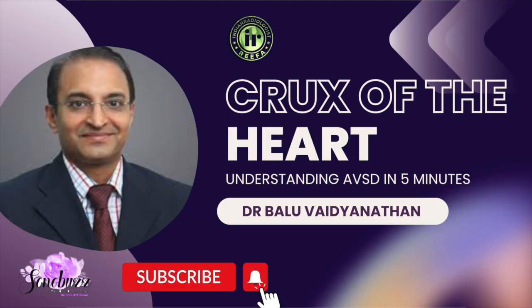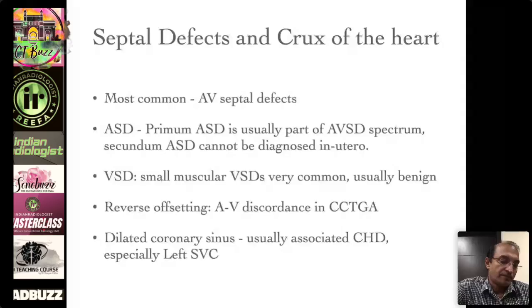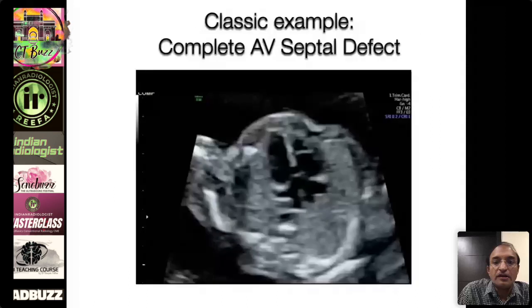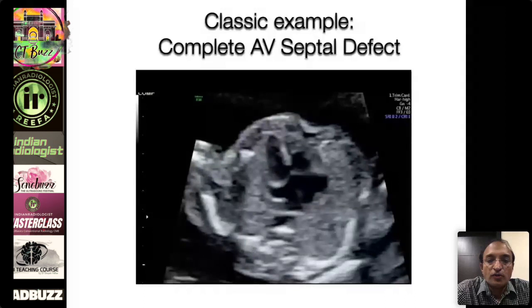The final group in the four-chamber view is the septal defects and the crux of the heart. I'm mostly going to focus on the AV septal defect, and I will also show you CCTGA four-chamber view because it deceptively looks very normal. This is an example of a complete AV septal defect — when you look at the center portion of the heart, you can make out the defect.